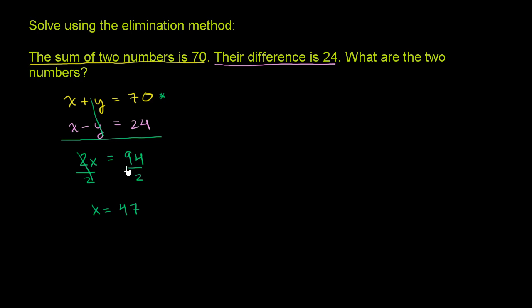And now we can substitute back into either one of these equations to solve for y. Let's try this first one. So we have 47 plus y is equal to 70. We can subtract 47 from both sides of this equation, and we are left with y is equal to 23.